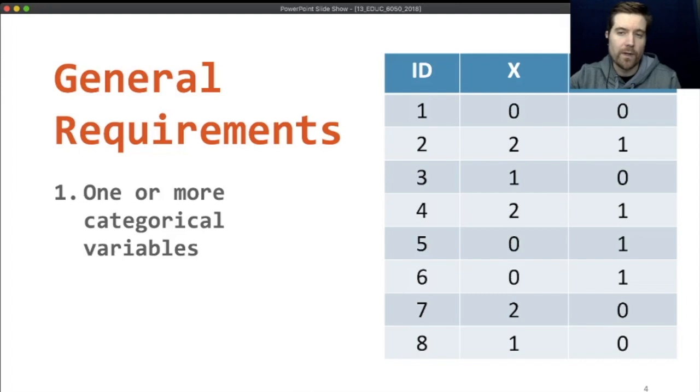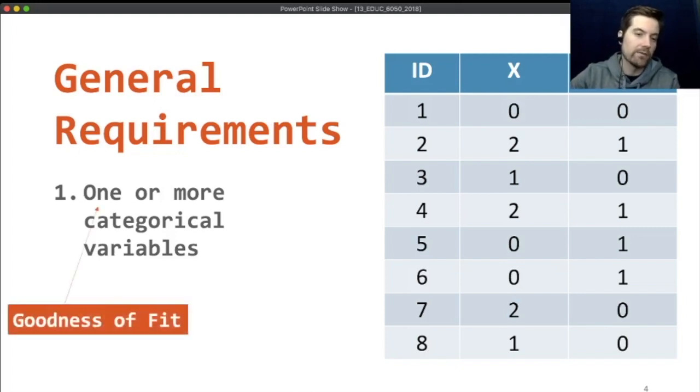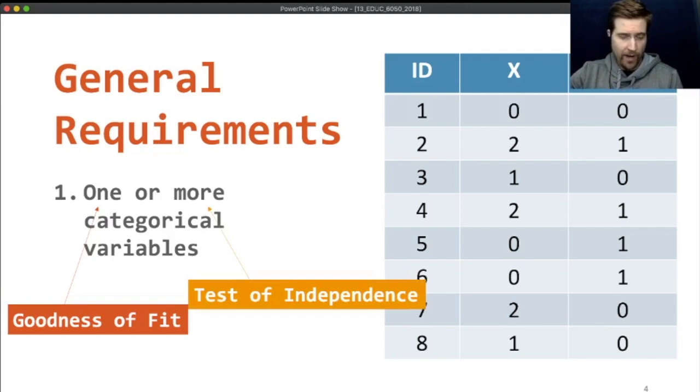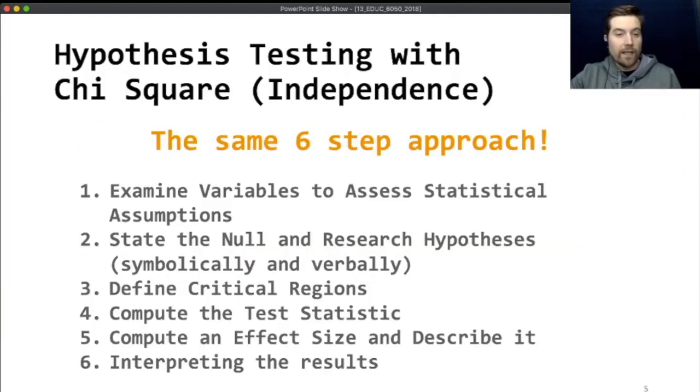For chi-square, it is for simple research questions. It's not controlling for other factors, and it doesn't provide a whole lot of information other than telling you if there's a difference or not. When we get to logistic regression, it can handle a wide variety of research questions with all types of predictor variables. Chi-square, on the other hand, is restricted to just categorical. So the general requirements, you need at least one categorical variable. You can have more than that. Shockingly, we're going to use the same six-step approach.